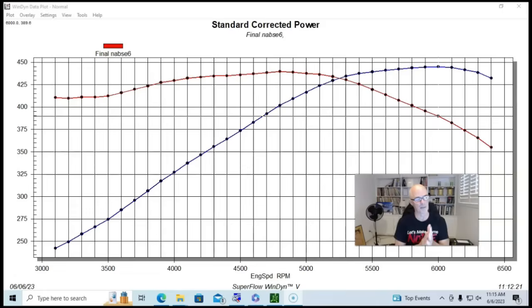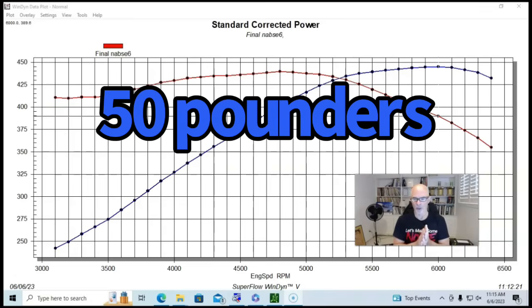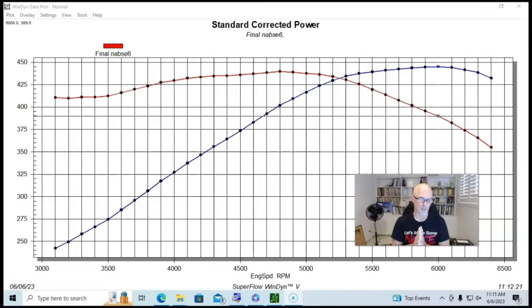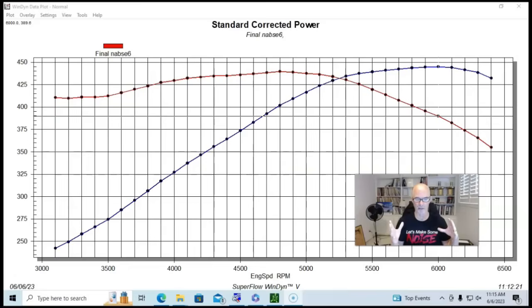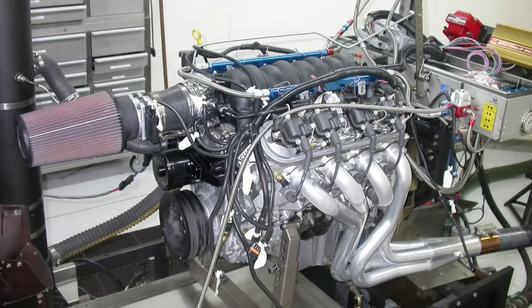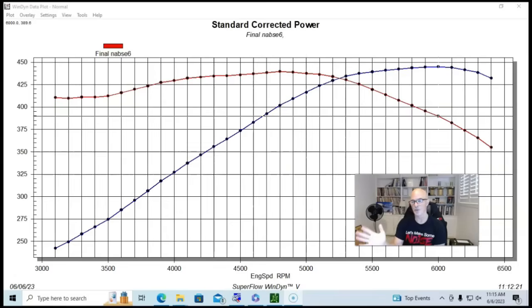We equipped it with long tube headers. This was back when we actually had a factory ECU on here and the factory mass air meter and everything. We did do a valve spring upgrade on the 241 heads. But other than the valve springs and the camshaft and the long tube headers, everything else was stock.